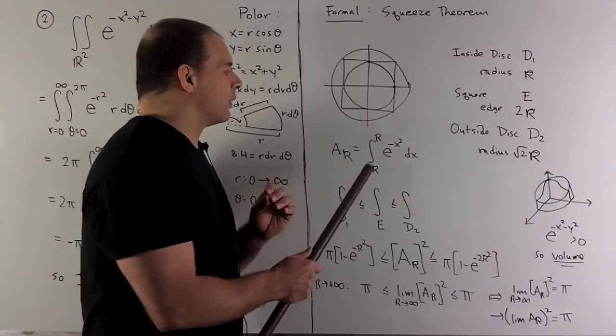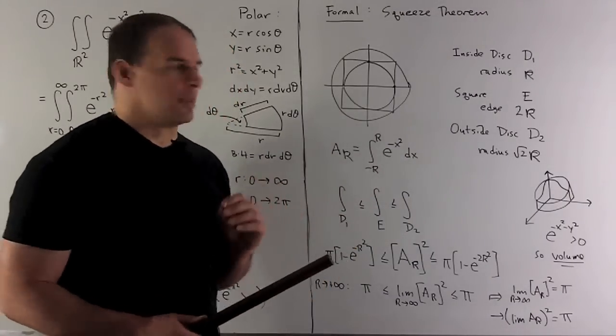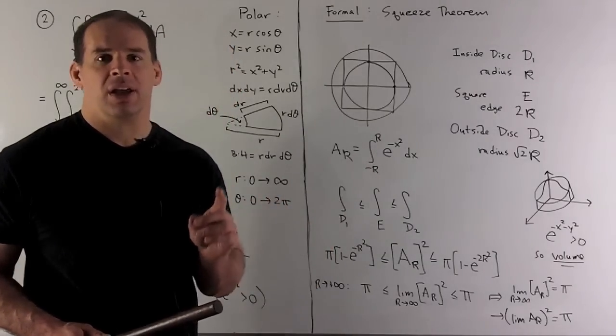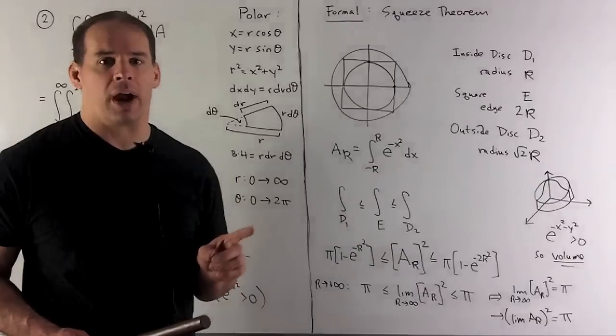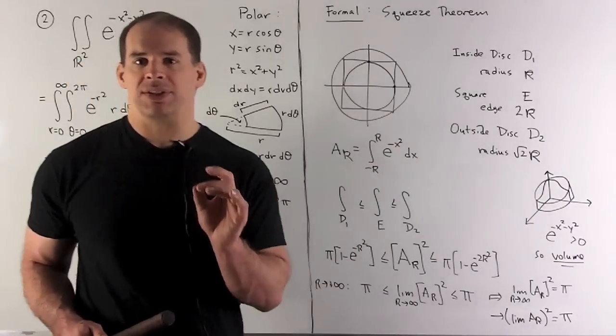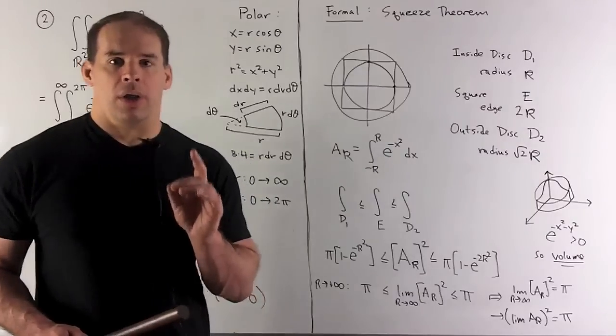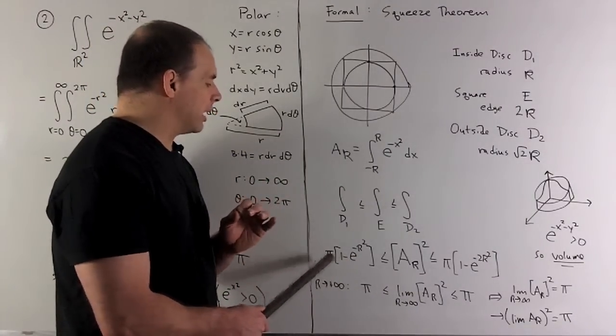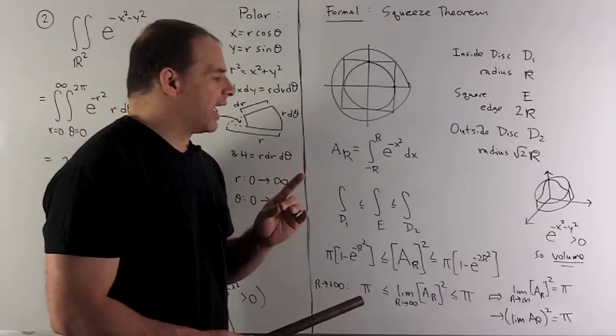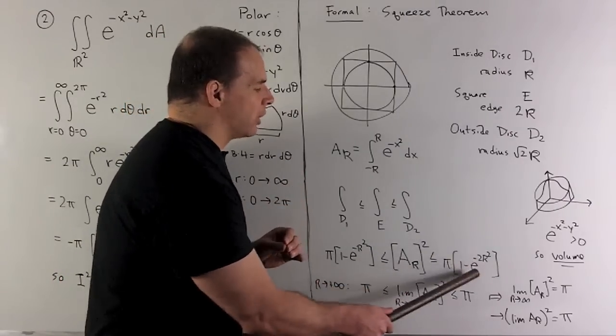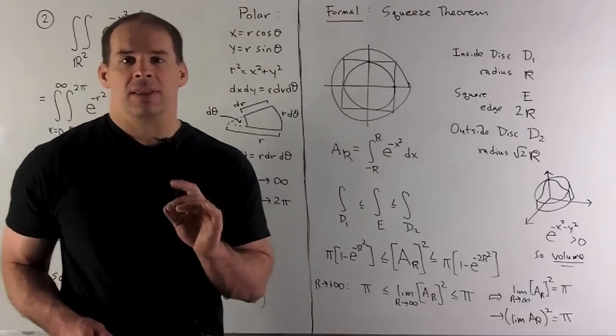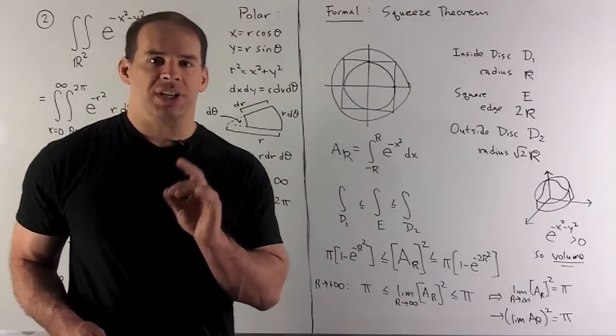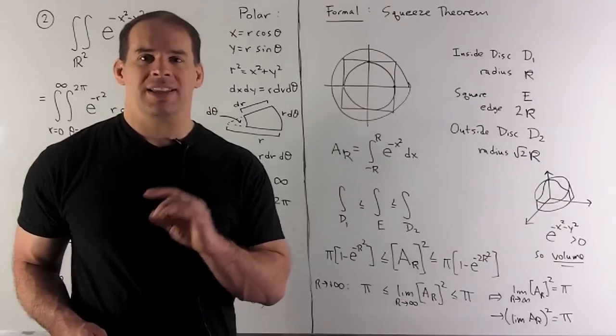For the integral over the square, I first define A_r = ∫ e^(-x²) dx from -r to r. Then the volume over the square is A_r². Now we apply the squeeze theorem. The limit on the left-hand side: this term goes to zero as r → ∞, so we get π. On the right-hand side, same idea: this term goes to zero, giving π. That means the limit in the middle must also go to π. Since the square function is continuous, I push the limit to the inside of the square.